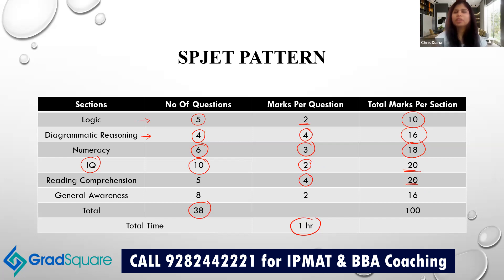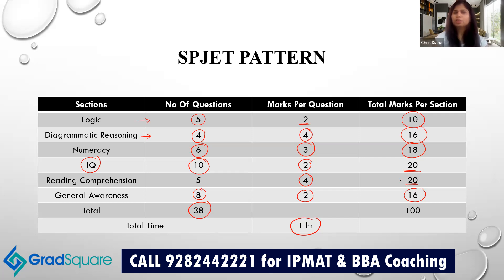The sixth section is General Awareness with eight questions, each carrying two marks, for a total of 16 marks. So the overall number of questions for this paper is 38, and the total marks for all six sections combined is 100. Again, this is a one-hour paper in total.